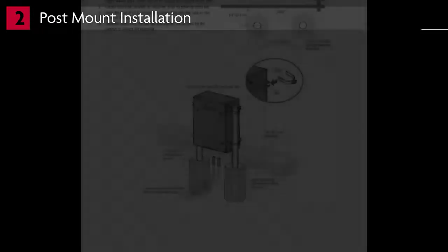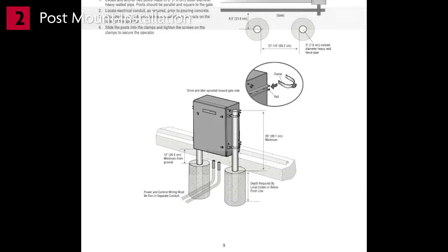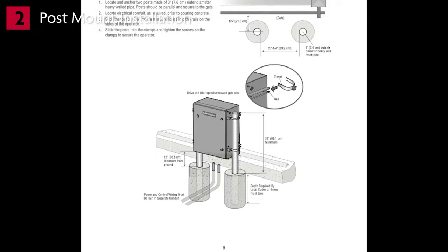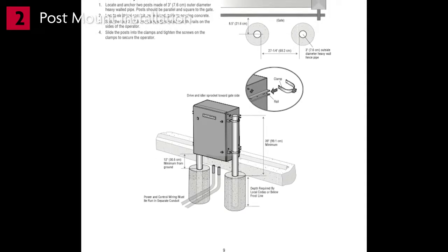Option two, post mount installation. The operators come from the factory configured to mount to an inside the frame post mount dimension of 26 inches, 66 centimeters, outside to outside of posts.